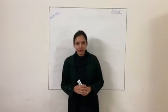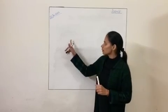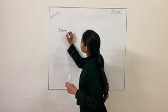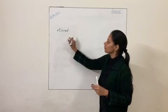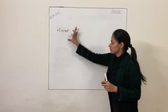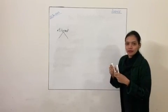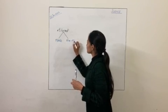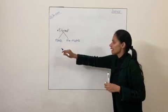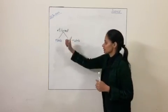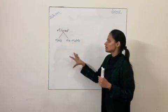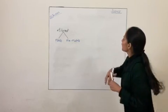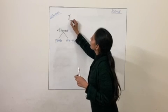Hello students, a very good morning to all of you. Let's begin with today's class. First of all, what do you mean by element? An element is a pure substance that cannot be broken down into any other substance by any physical or chemical means. Elements can be classified as metals and non-metals based on their physical and chemical properties. In today's class we are going to discuss the physical properties of metals and non-metals.